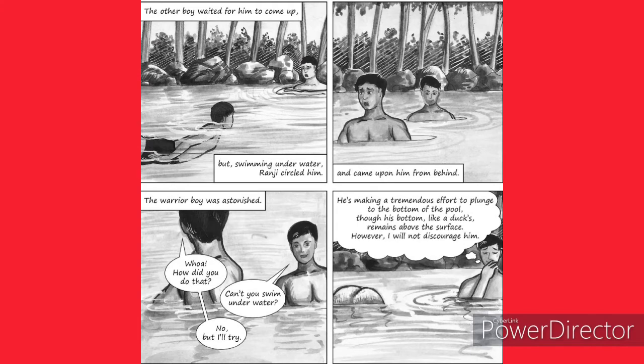Ranji replied it was not very good and demonstrated another perfect dive. He dived again to teach the big boy. The warrior boy was already in the pool waiting for Ranji to surface, but Ranji swam underwater, circled him, and came up from behind — completely surprising him. The warrior boy asked astonished, 'How did you do that? I was waiting for you and you appeared from behind!'